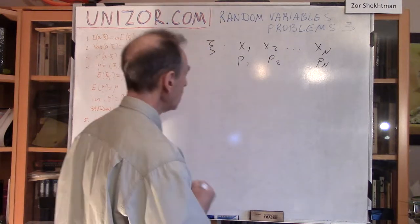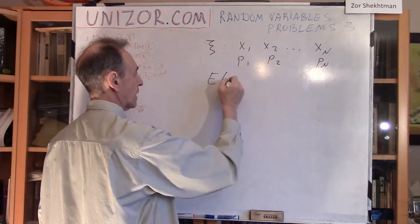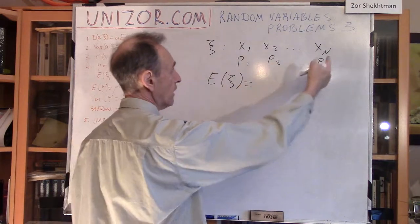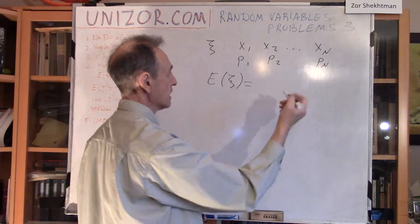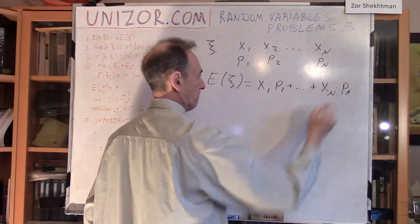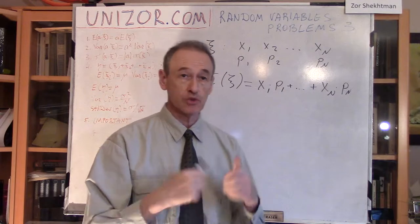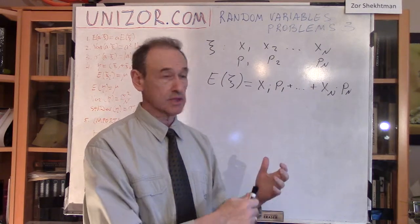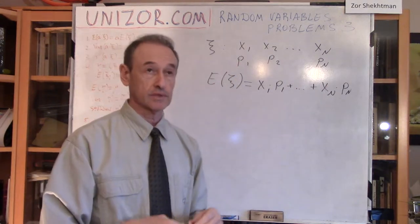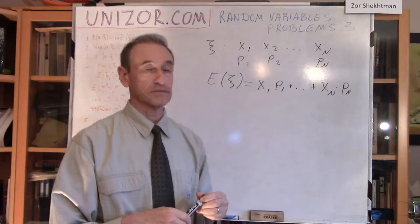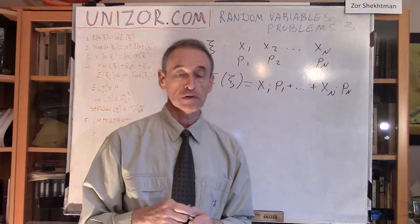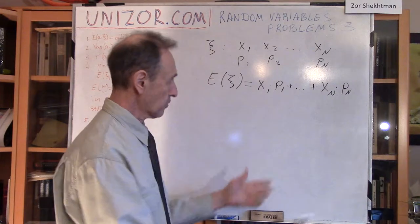We have this random variable. It has its own expectation or mean value, which is basically a weighted average of different values with probabilities as weights. Using the statistical frequency-based definition of probabilities, the average value of many experiments of the random variable xi will be closer and closer to this expectation value as the number of experiments goes to infinity.